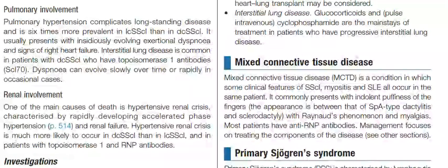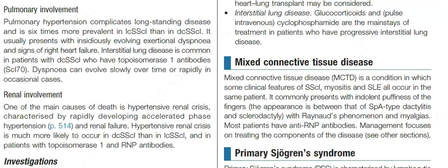Pulmonary hypertension complicates long-standing disease and is six times more prevalent in limited cutaneous systemic sclerosis than in diffuse cutaneous systemic sclerosis. It usually presents with insidiously evolving exertional dyspnea and signs of right heart failure.